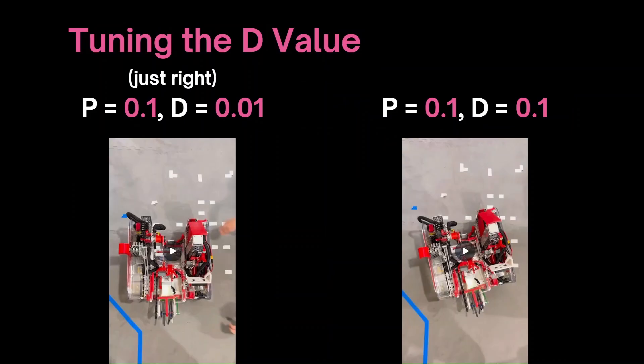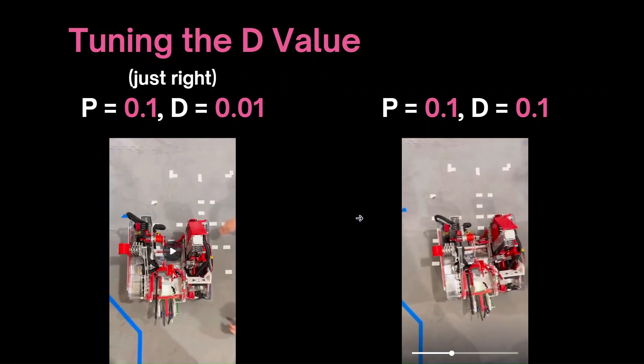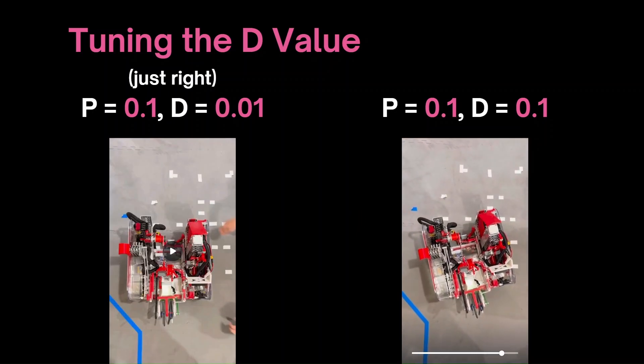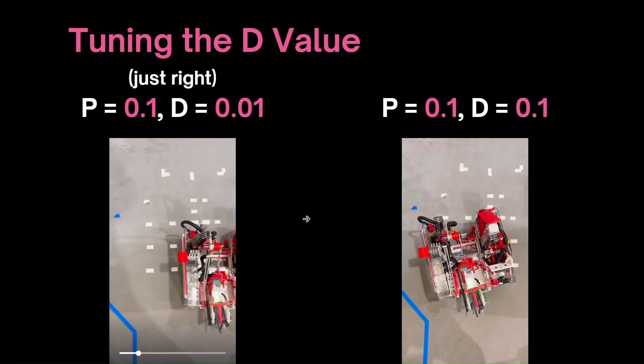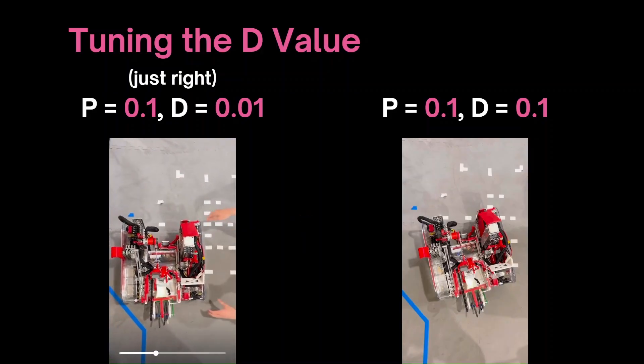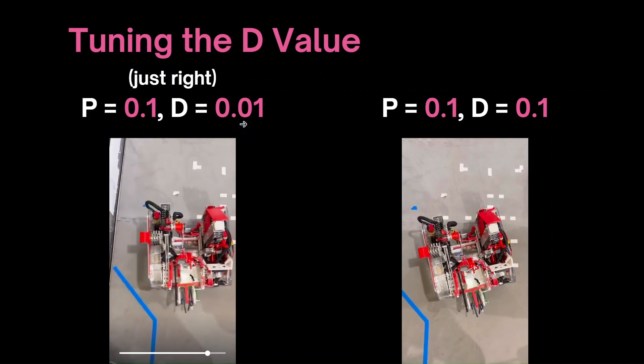Now we can move on to tuning the D value, and it'll help dampen the overshoot when created while the robot is correcting back to its path. We can increase the D value to further dampen the oscillations. However, increasing it too high will only create undesired results where the robot can barely move properly. So we can, again, adjust the D value to a sweet spot so the robot can correct back to its starting position without any overshoot at all. The D value will generally be somewhere around 0.0 something.